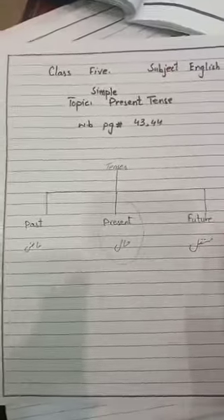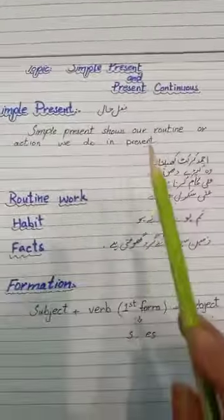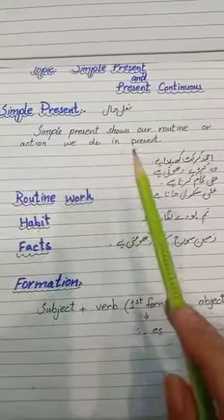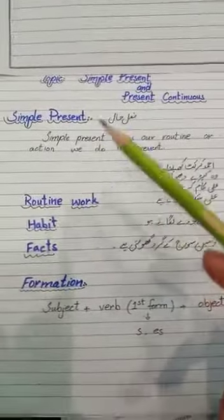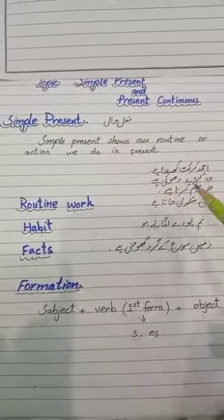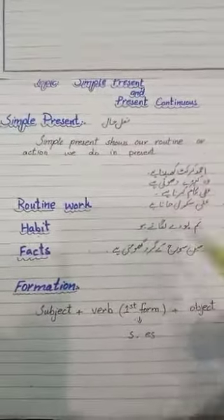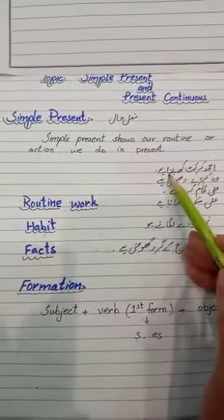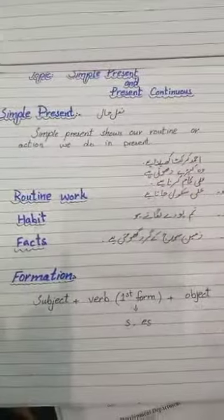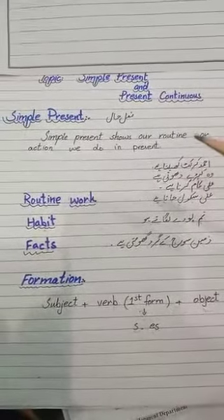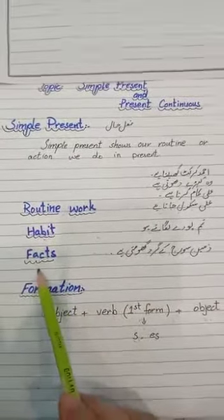Okay students, Simple Present. Simple Present shows our routine or action we do in present. The actions we do in present are shown in Simple Present. For example: Ahmad plays cricket, she washes clothes, Ali does work, Ali goes to school. In Urdu, when we see sentences, at the end we have words like 'ta hai', 'ti hai', 'tay hain', etc. These indicate that this is a Present tense sentence.